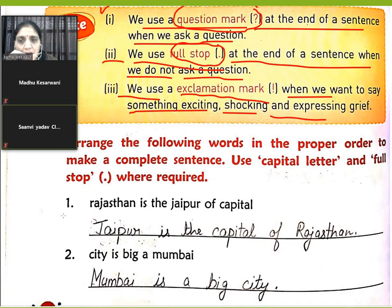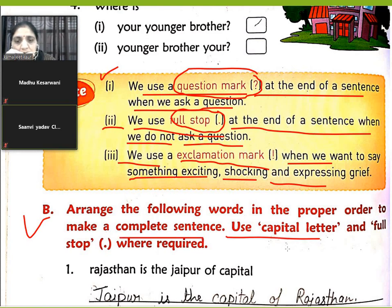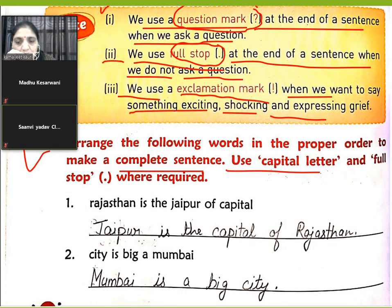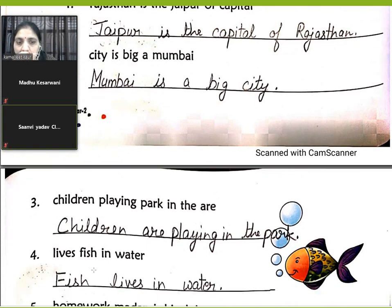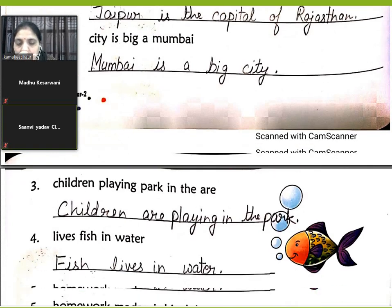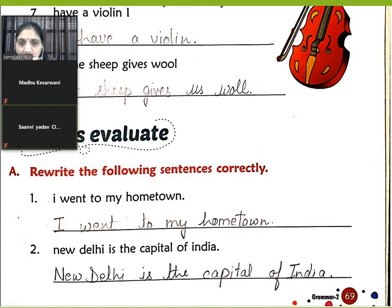Exercise B has been completed — arrange the following words in proper order to make a complete sentence. Use a capital letter and full stop where required. We just write them as needed.